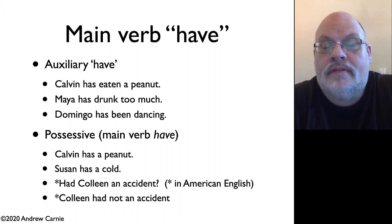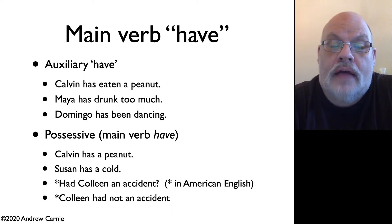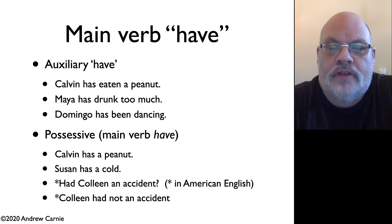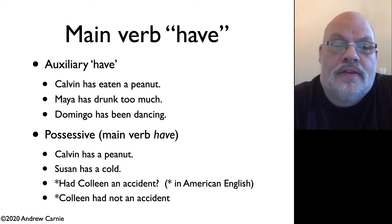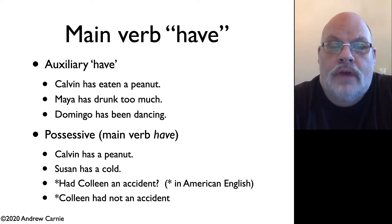This is different from possessive verb have, which is a main verb — as in Calvin has a peanut, Susan has a cold. Those indicate possession and are a main verb. One of the ways we know this is not an auxiliary is that, at least in American English, you cannot do subject-auxiliary inversion with main verb have.